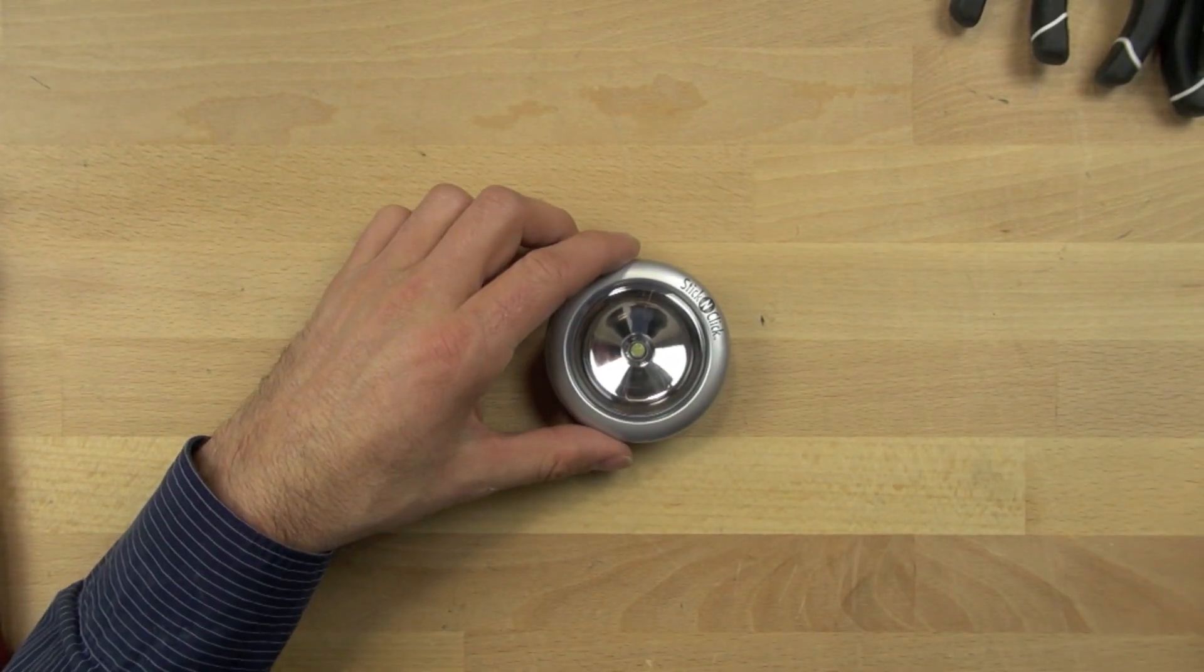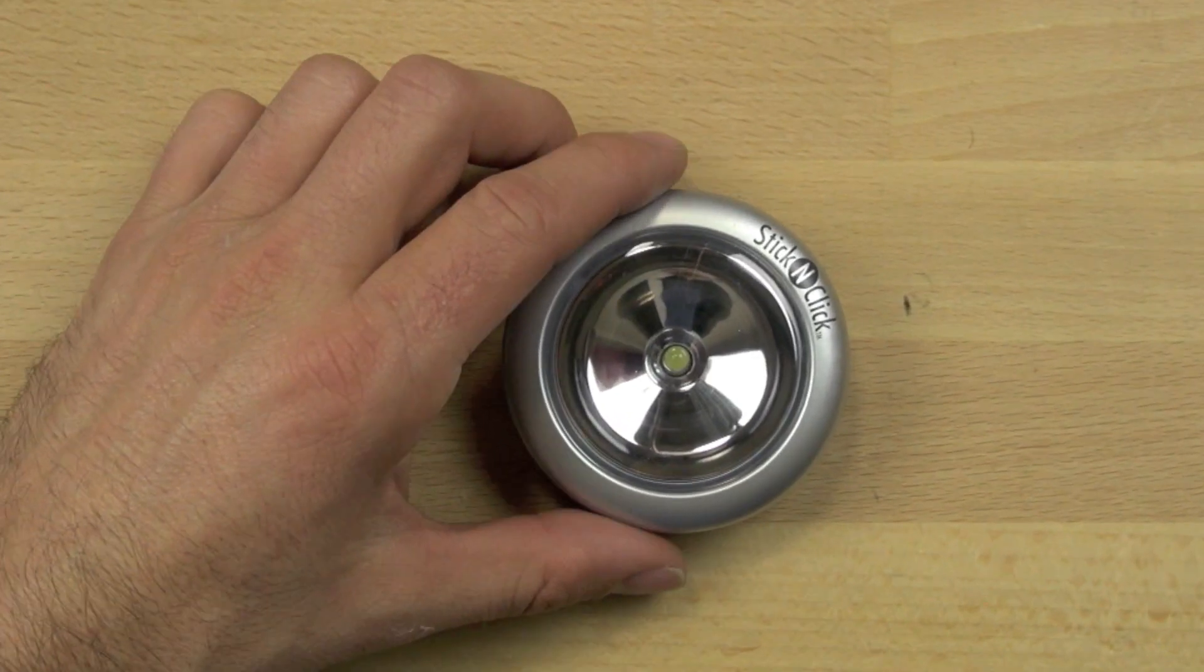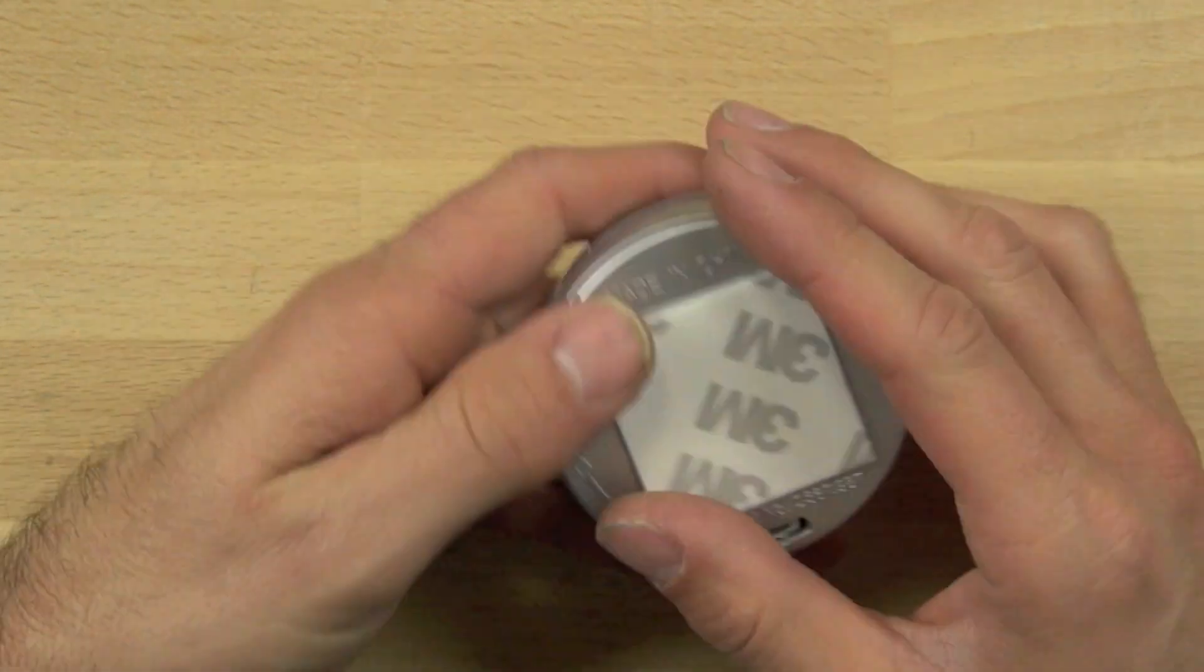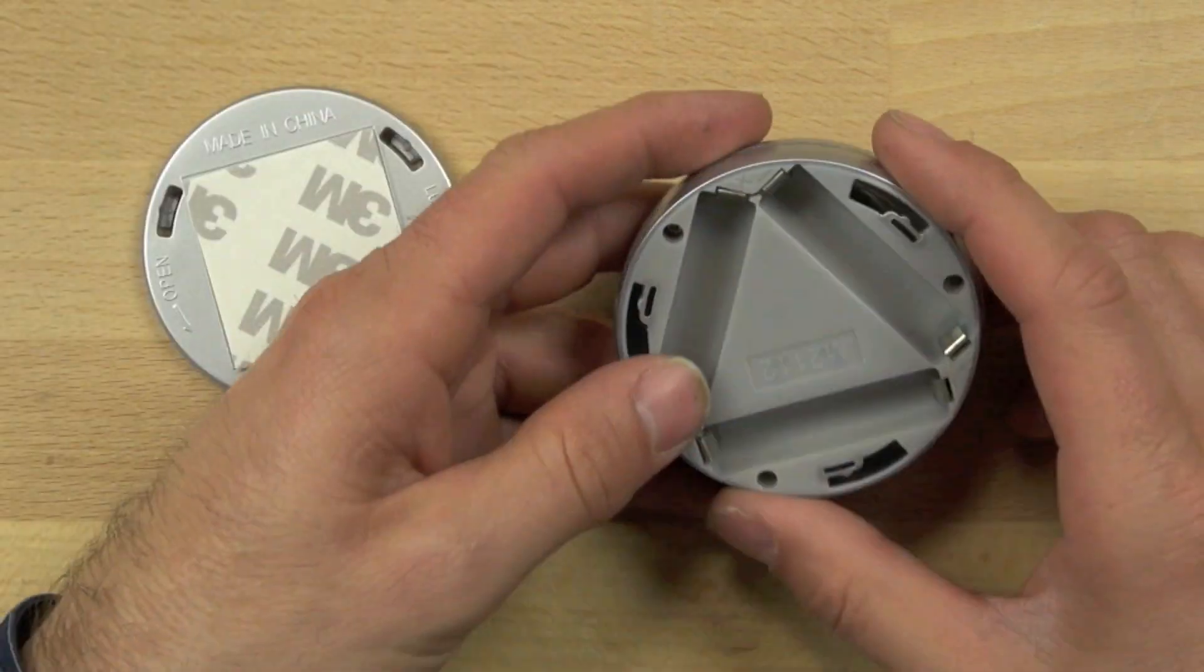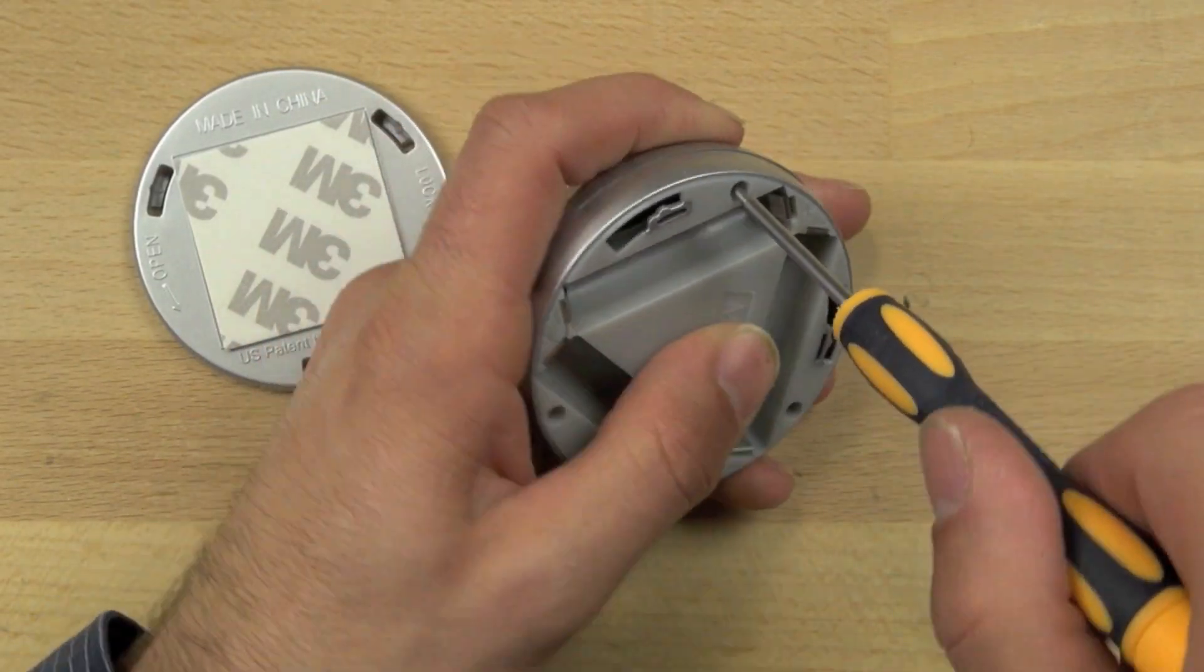So in this video we're going to show you how to hack a click and stick tap light. We're going to show you how to use the body of the tap light for the spider's body and we're going to also show you how to use the switch to turn the spider on and off.